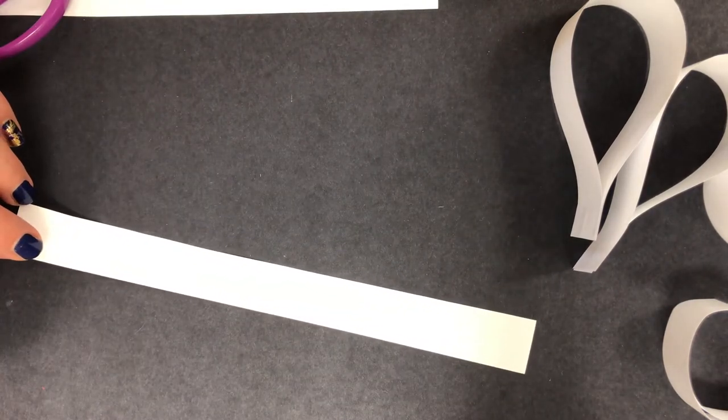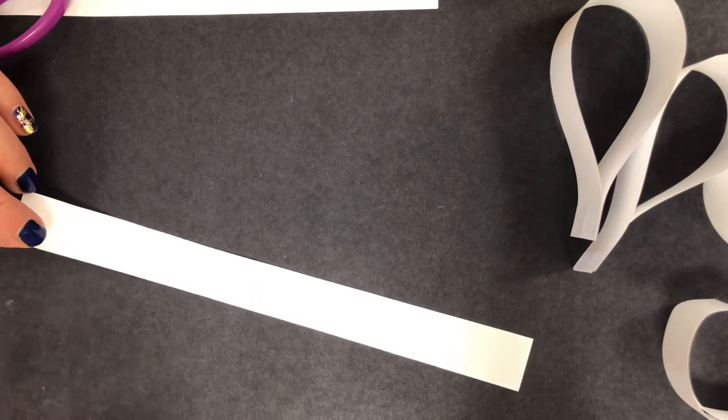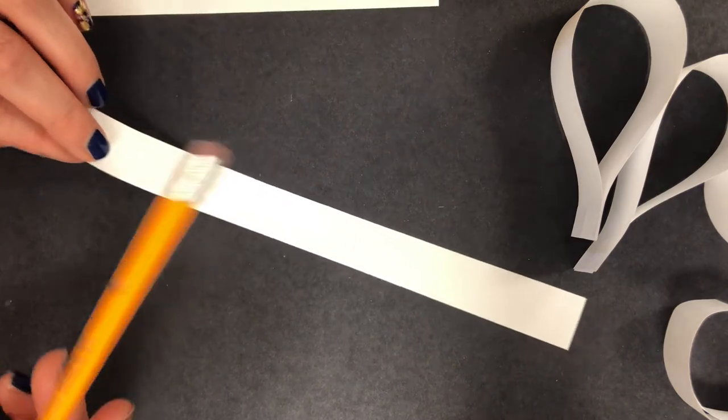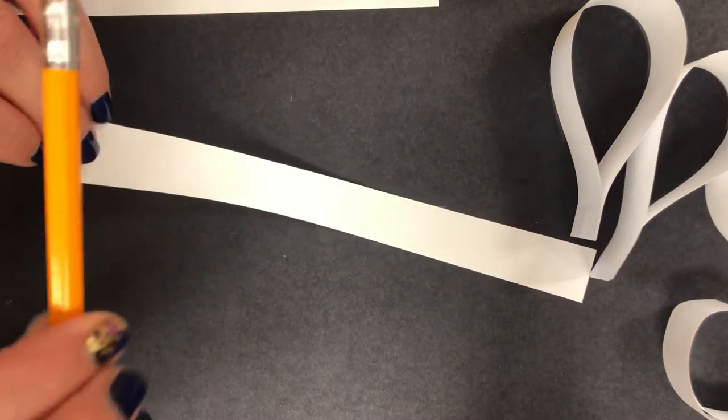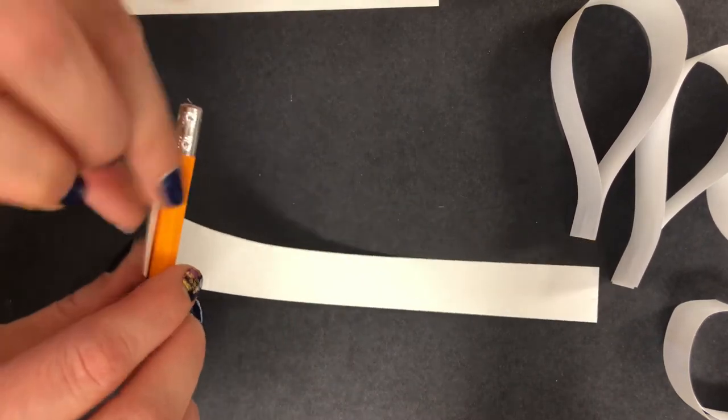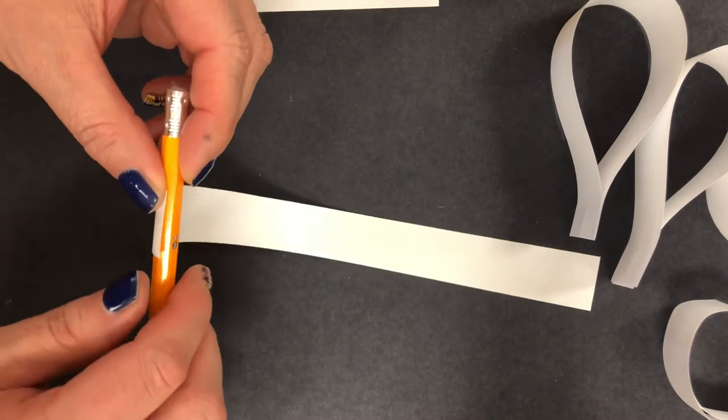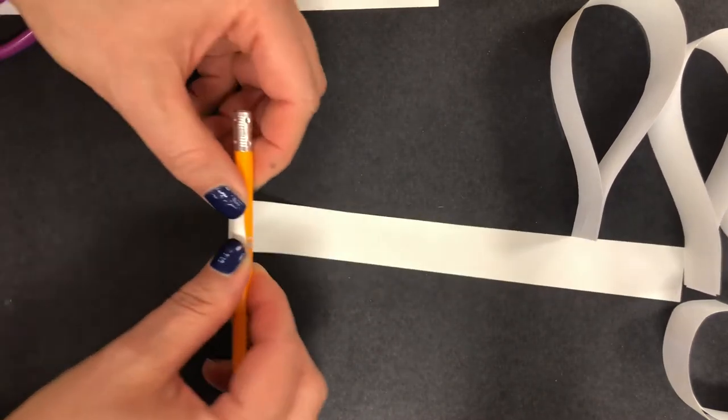The next step is to take your pencil. You could use a colored pencil or a marker, any type of tool that's shaped like this. I'm going to take my paper strip and come to kind of the middle of my pencil, wherever it's comfortable for you. Notice how I'm holding it down with my thumb, so I have it pinched here with my thumb.